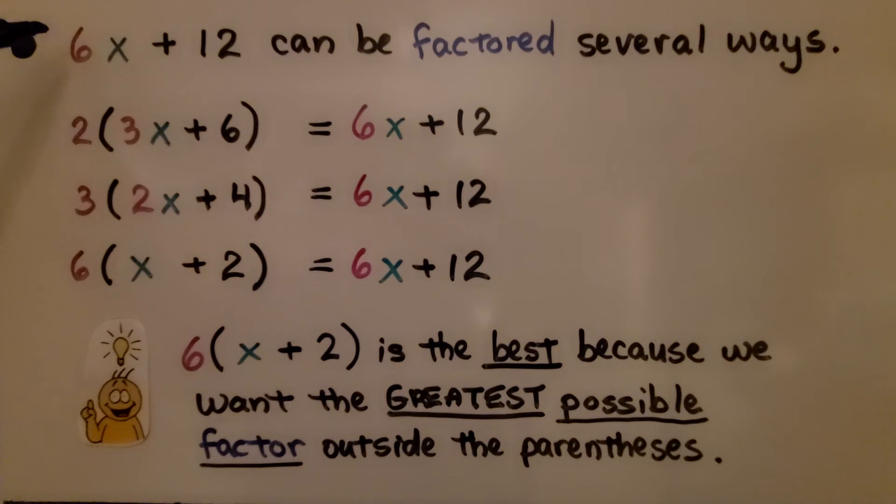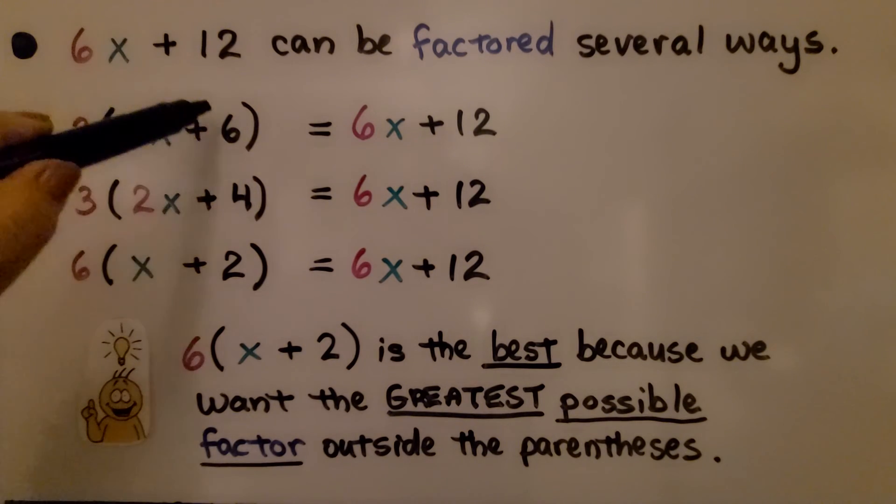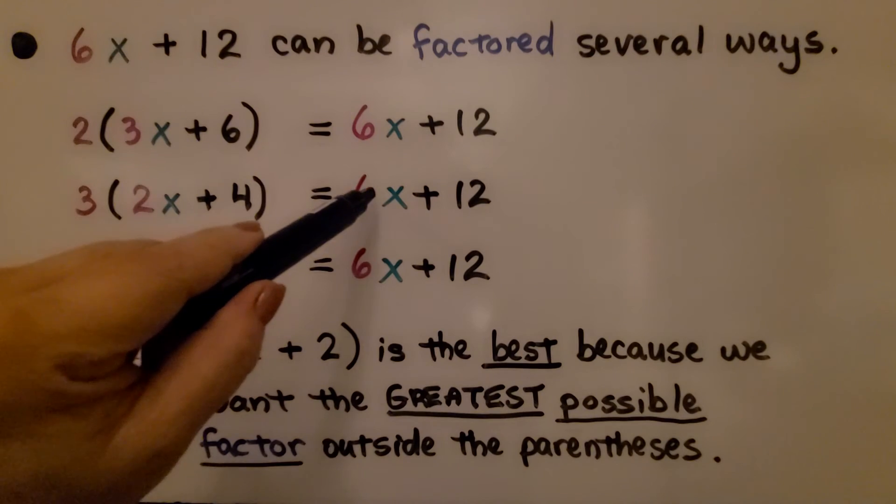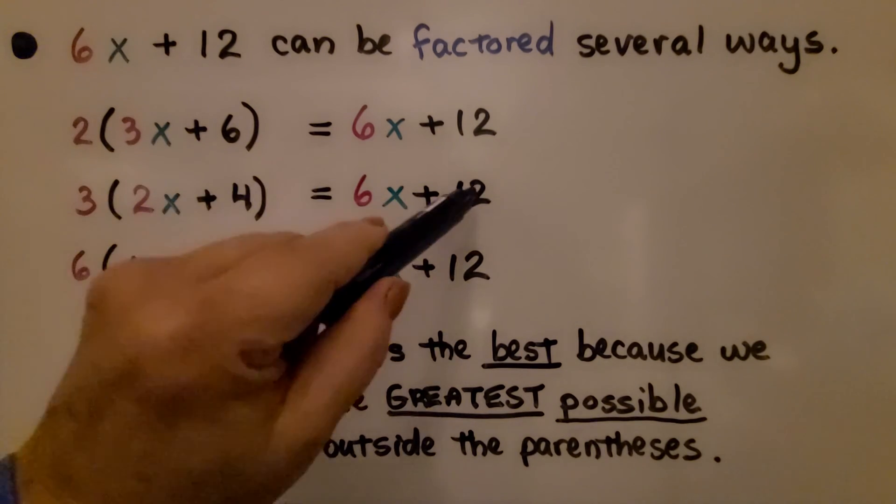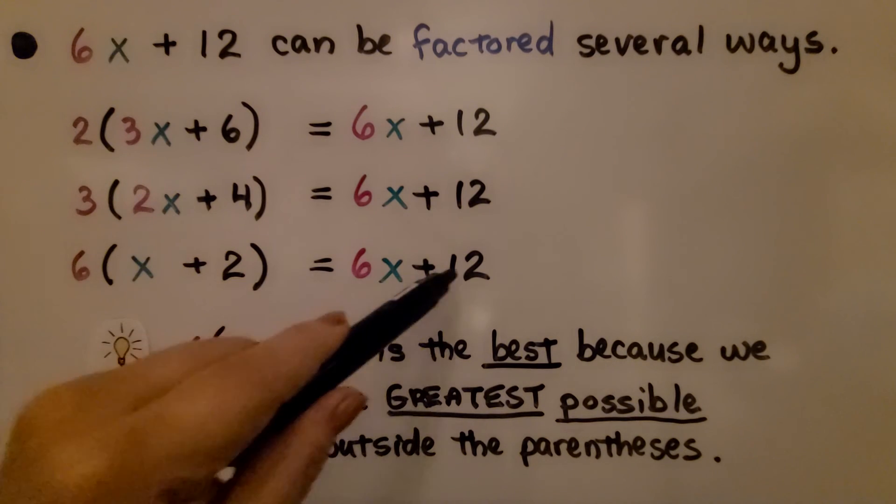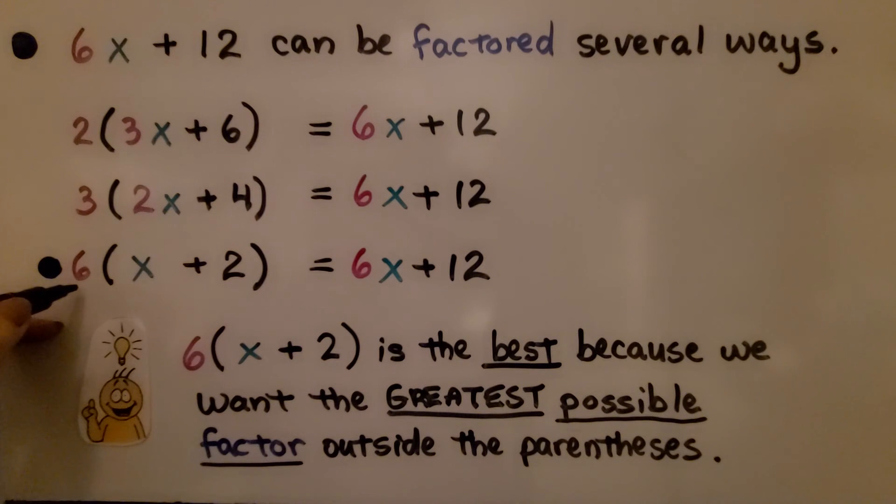Now take a look at this one. We have 6x plus 12. 6x plus 12 can be factored several ways. We can do 2 times (3x plus 6)—that would give us 6x and 12. We can also do 3 on the outside: 3 times 2x gives us 6x, plus 3 times 4 gives us 12. We can also do 6 times x plus 6 times 2, which gives us 12. So 6 on the outside with x plus 2 on the inside is the best, because we want the greatest possible factor outside the parentheses. These other factors are not as great as 6. This is the best possible answer.